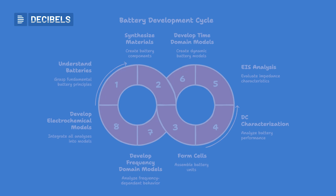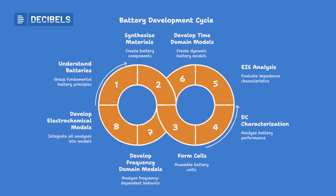Once you have this complete exposure, you will further move into physics-based and electrochemical models. The course will help you build complete models from scratch, including single particle models and reduced-order models. With this real experience, you will have full competency covering the entire workflow — from understanding batteries and materials, synthesizing materials, forming cells, performing characterization, performing EIS, developing time domain models, frequency domain models, and electrochemical models.